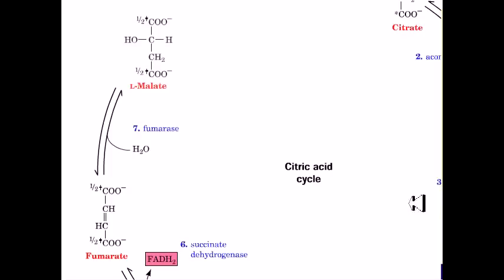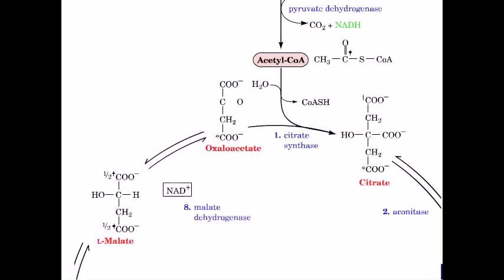Fumarate is converted to L-malate by fumarase (reaction 7). L-malate is converted to oxaloacetate by the enzyme malate dehydrogenase (reaction 8).